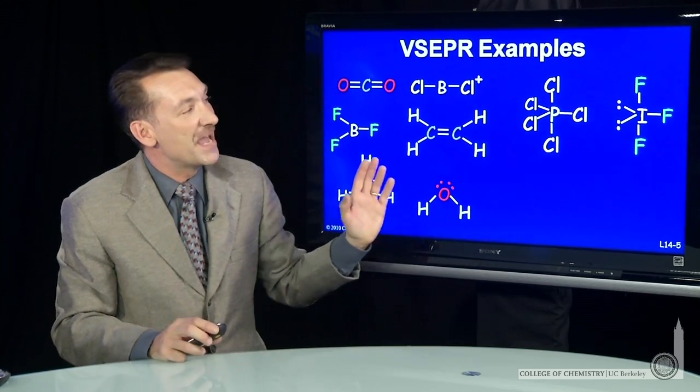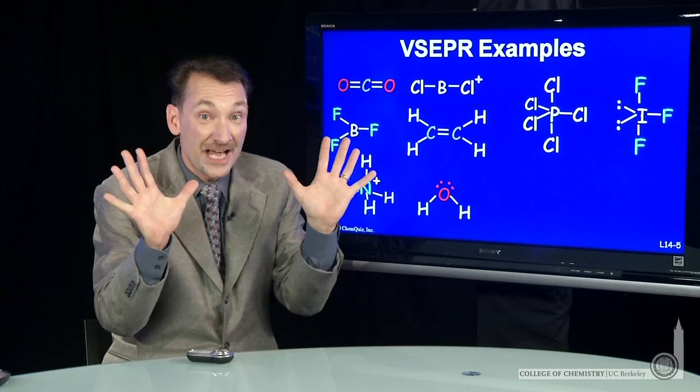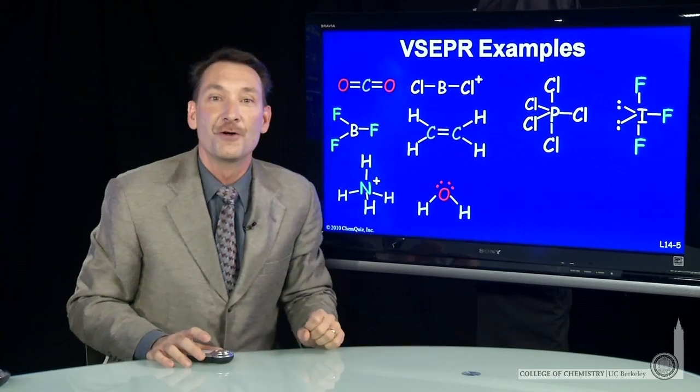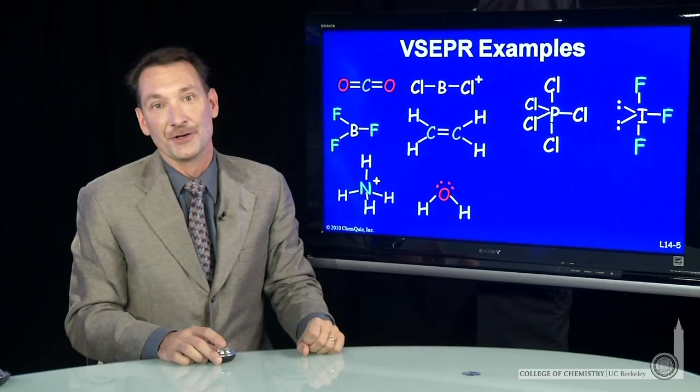In fact, it's a little bit of a bent T because these two electron pairs, again, will squish down, have a greater steric interaction, and squish down those two fluorines, creating kind of a bent T, these angles less than 90 degrees.